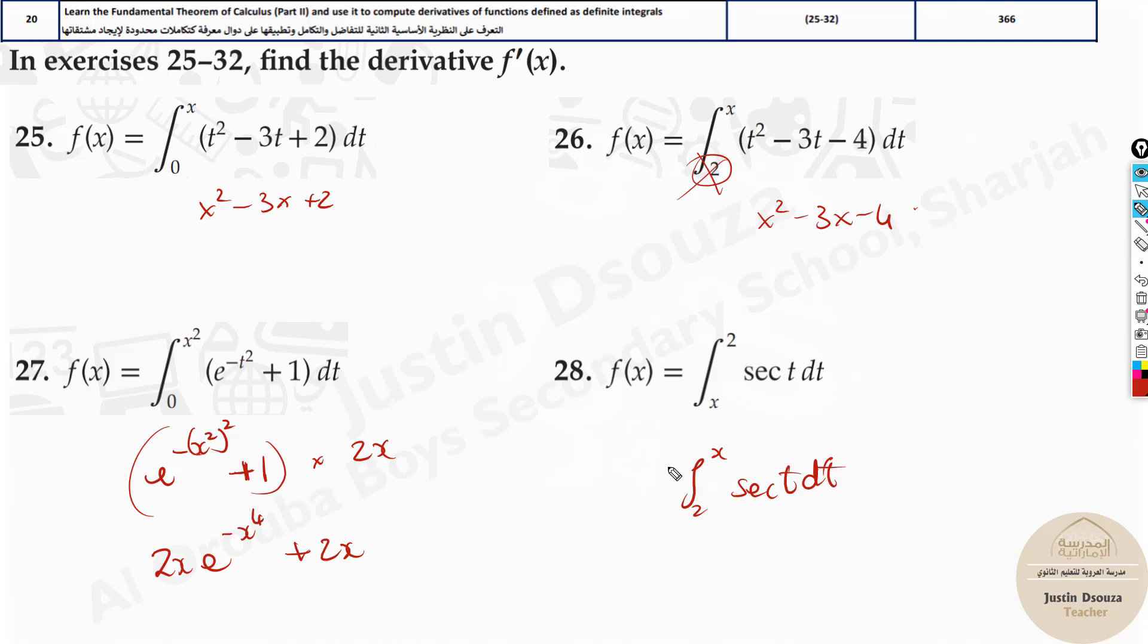But what happens when you swap this? You need to add a negative sign. This is the actual way to do it. When you want to swap the limits, you need to add a minus sign. Now, don't go to do anything. No integration, nothing. Minus remains. It will just be secant x dt goes.